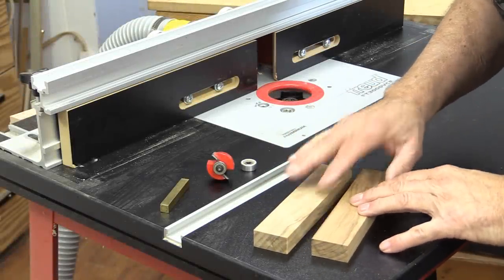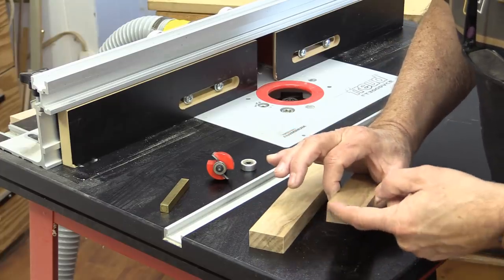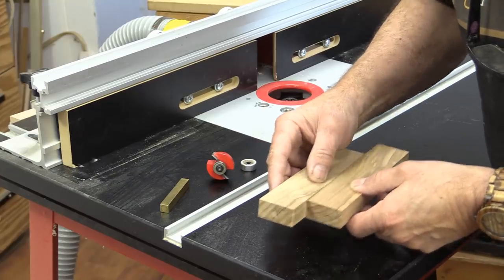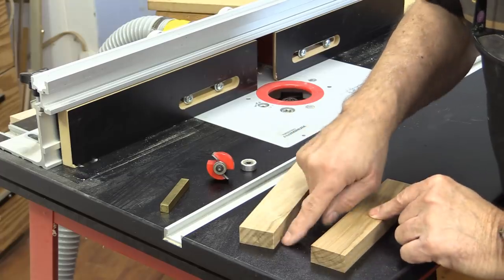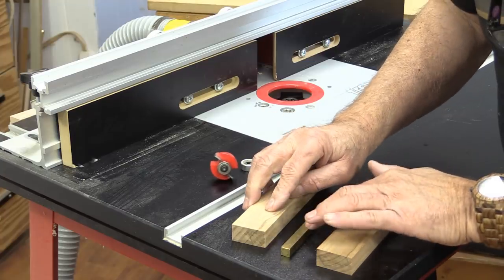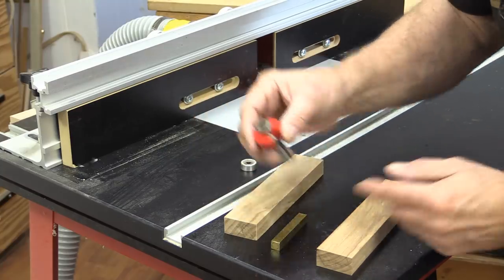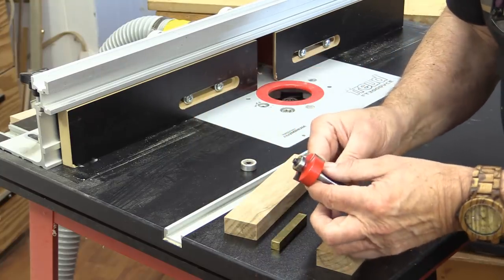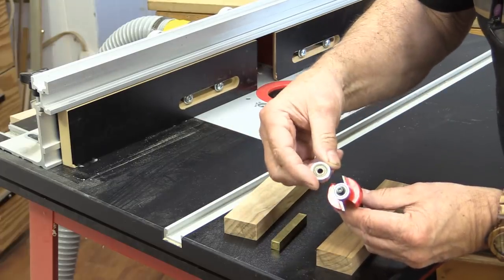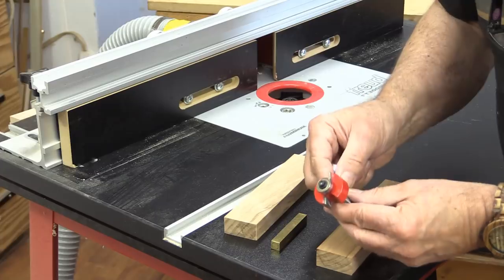Now I've moved over to my router table because what I need to do now is cut a rabbet in each one of these. The purpose of that rabbet is so these two pieces will join together and be able to slide back and forth. The material that I'm using is three-quarters of an inch, and half of three-quarters of an inch is three-eighths of an inch, so I'll be able to use my marking gauge to set that up on the router. I'm going to be using something called a rabbiting bit, and a rabbiting bit allows you to change different bearings in the top. I put a bearing in here that will allow me to cut a three-eighths inch rabbet.